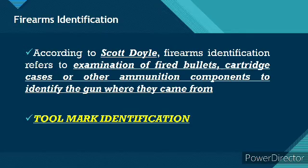Most especially if the firearm used to fire the shells or bullet is registered, the firearms identification examiner will be able to determine to which name the firearm was registered. This way we can approximate who used the firearm, most especially if it was used in the commission of a crime.